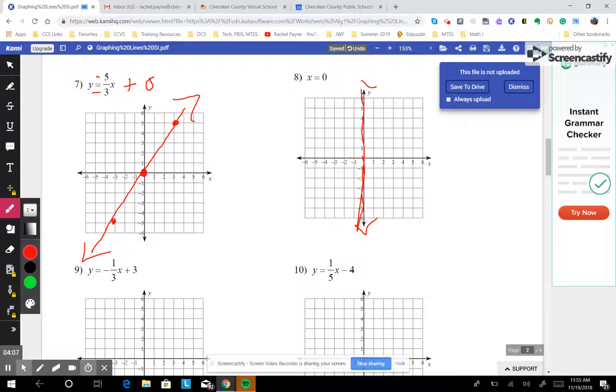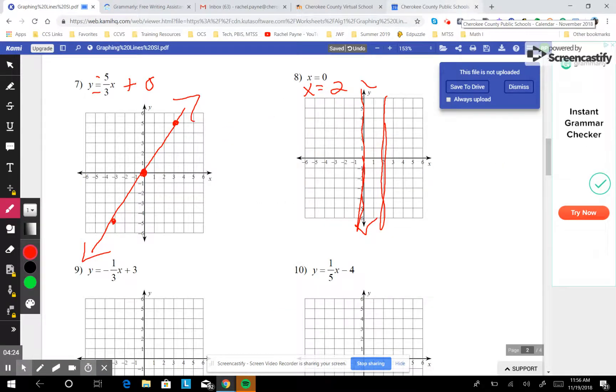And if you can't remember which one it is, then draw another example. I'm going to try x equals 2. X equals 2 means find 2 and draw a line. So that tells me, that reminds me, oh yeah, it goes straight up and down.